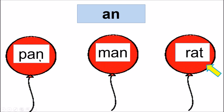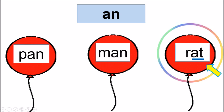AN and Pan — rhyming. AN and Man — rhyming. AN and Rat — are they rhyming, children? No. This word belongs to the AN family. So rat and AN are not rhyming. So this balloon is the odd one out.